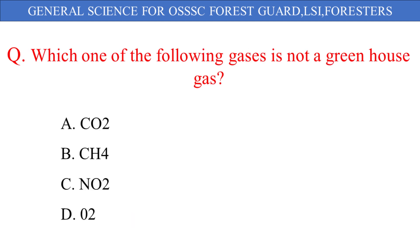Which one of the following gases is not a greenhouse gas? The given options are: A. CO2, B. CH4, C. N2O, D. O2. And the correct answer is option D: O2.